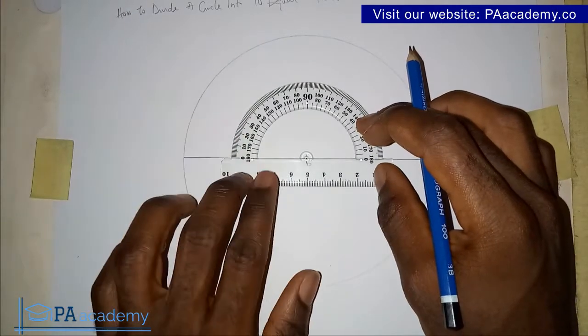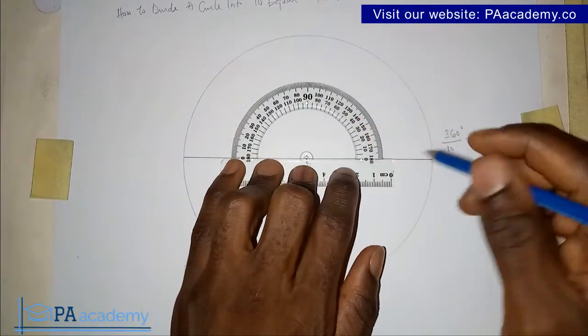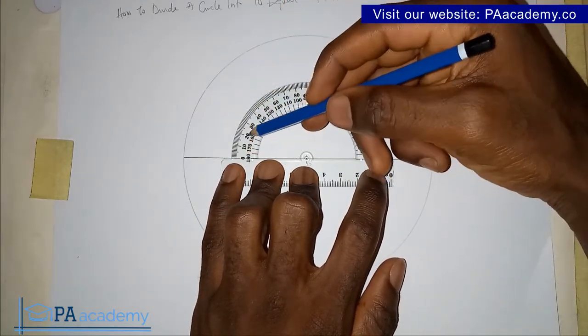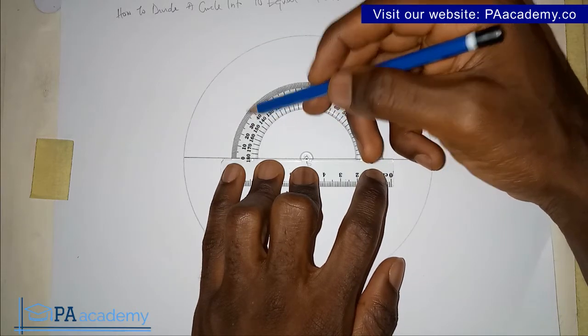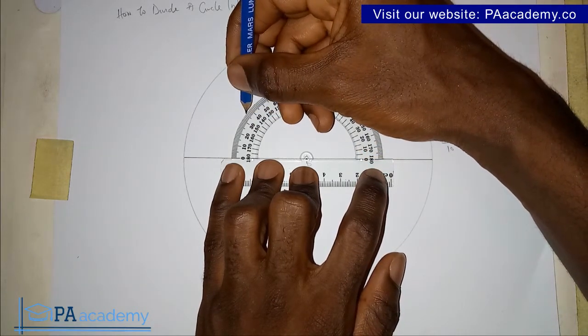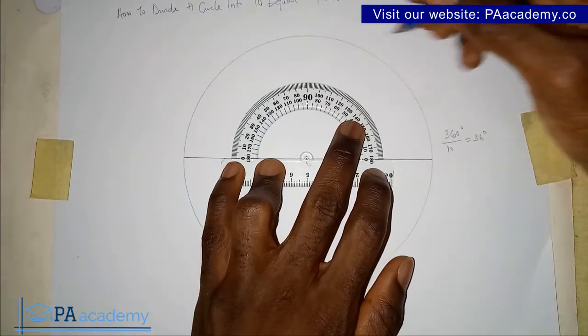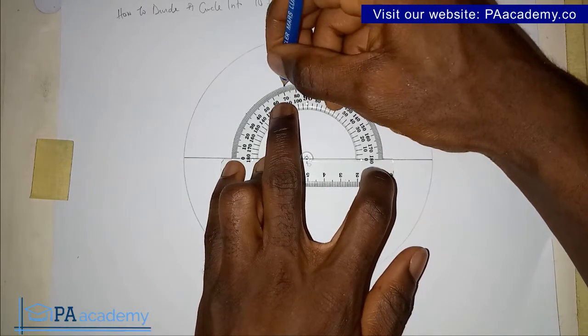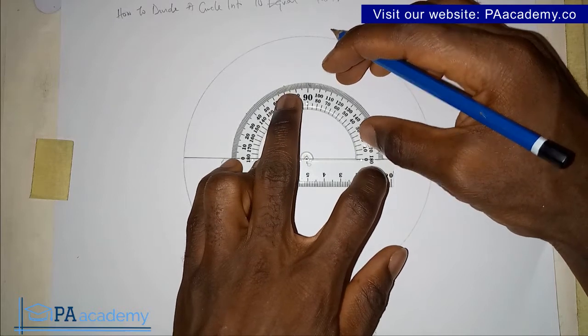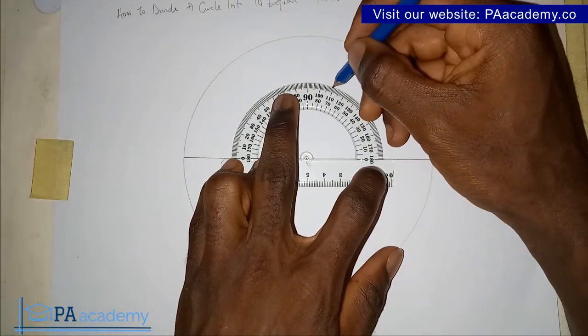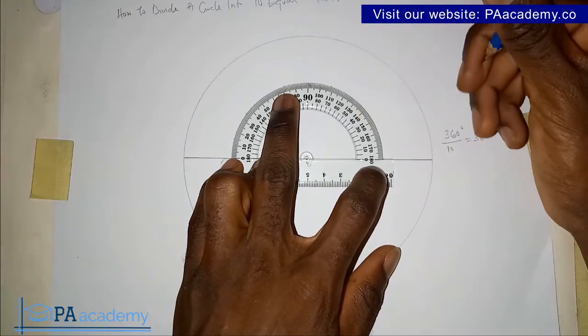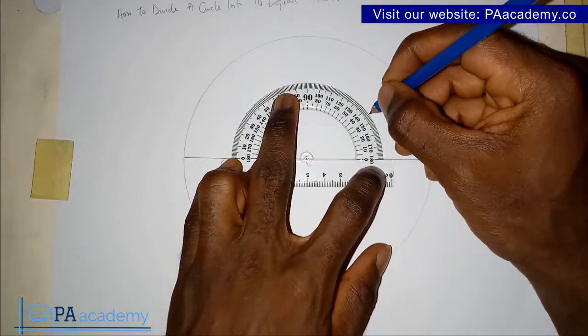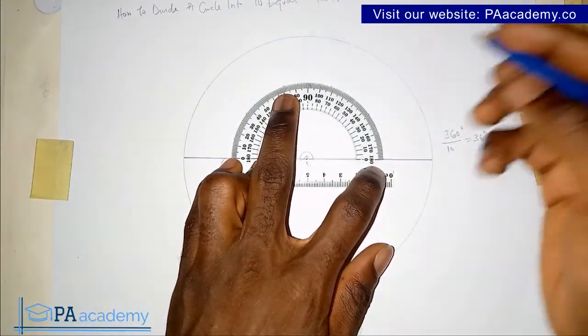Before you start marking, make sure that your protractor is properly placed on the line and points at the center. Then you mark your 36 degrees. This is 0, 10, 20, 30, and this is 40, so 36 is in between. This is where it's 36. The next 36 would give us 72, then plus another 36 gives us 108. Plus another 36 gives us 144, and plus 36 gives us 180.